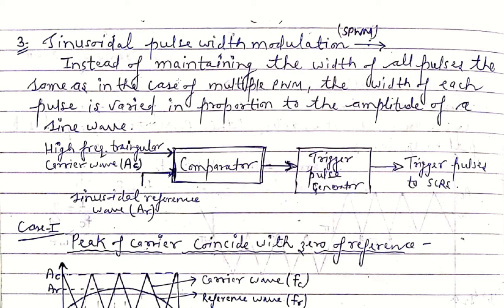In multiple PWM technique, the width of all pulses is the same as Ud by n, but in SPWM technique the width of each pulse is varied in proportion to the amplitude of a sine wave. In multiple PWM we take a rectangular pulse as a reference wave, but in sinusoidal PWM technique we take a sine wave as a reference wave. The general block diagram has a comparator where a high frequency triangular carrier wave is compared with a sinusoidal reference wave having amplitude AR. The comparator output is applied to a trigger pulse generator, which generates trigger pulses to the SCRs of a single phase full bridge inverter.